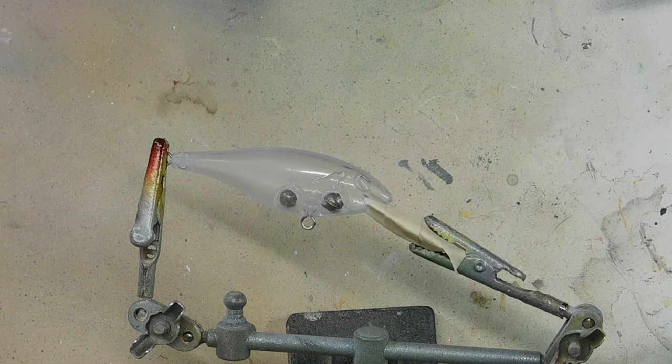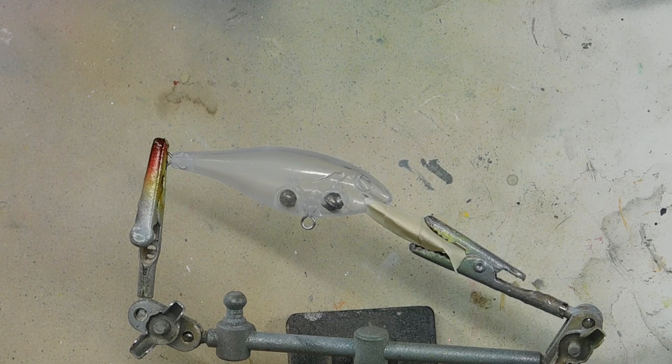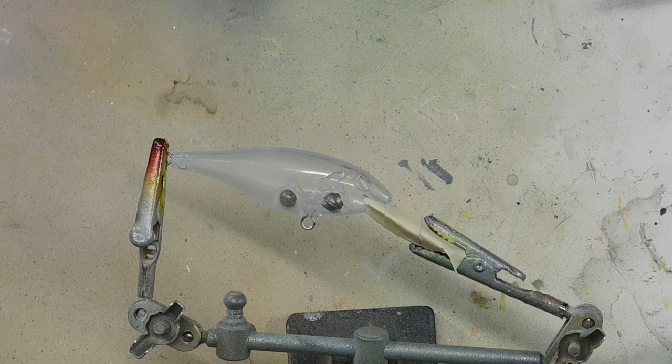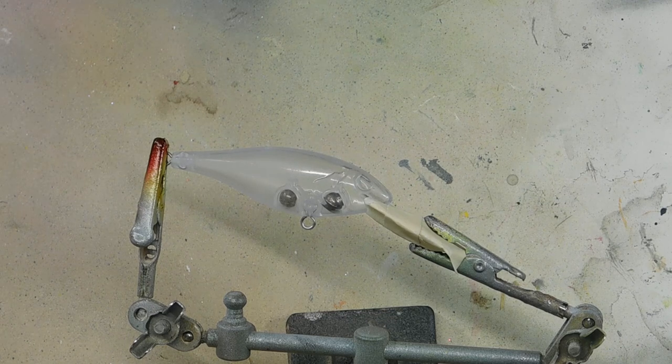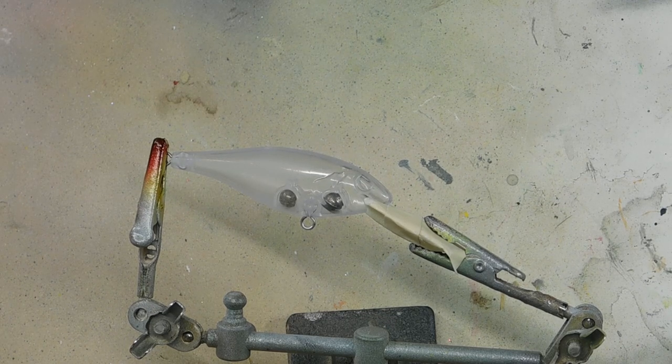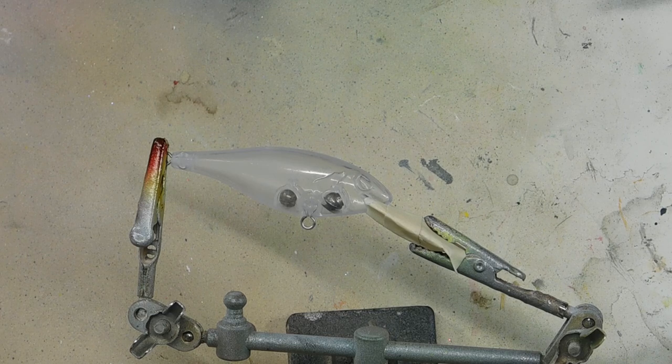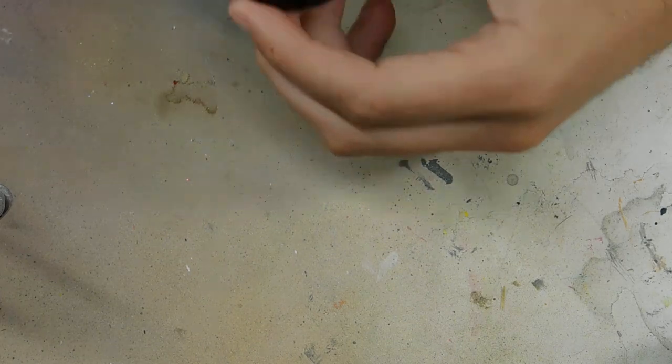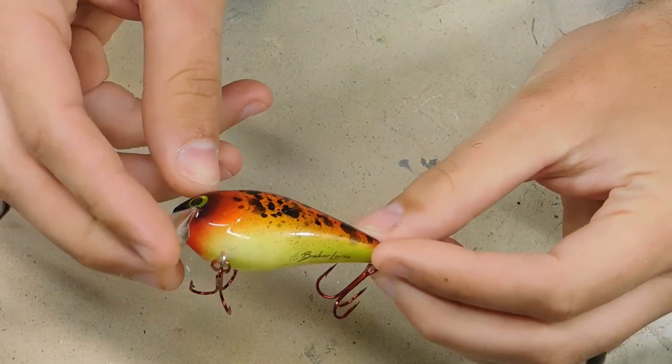We're back with another lure painting video. I've got a really interesting one for you today - we're going to be doing a paint splatter pattern. I did one the other day, playing around with it. It turned out really cool, then I went fishing with it, had a bite, went to set the hook, smoked it on the rocks and busted the lip off of it.